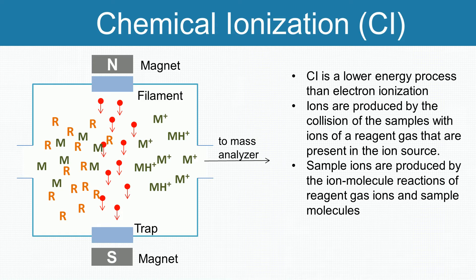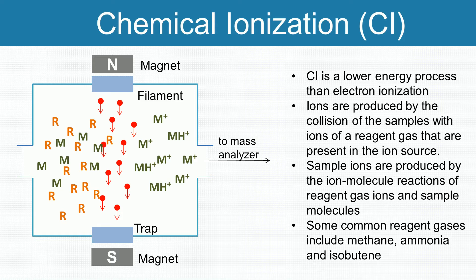In general, reagent gas molecules are present in the ratio of about 100 to 1 with respect to sample molecules. Some common reagent gases include methane, ammonia and isobutane. Like electron ionization, chemical ionization usually works with gas chromatography.